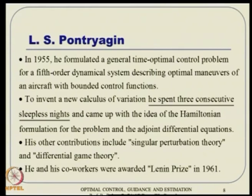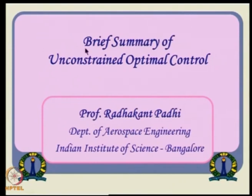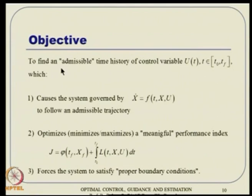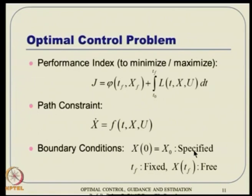Pontryagin's contribution simplified the framework: when you follow the state equation, costate equation, and optimal control equation, we do not really need to worry about Euler-Lagrange equations anymore. So let us quickly review the unconstrained optimal control framework we studied before. The objective was to find an admissible time history of the control variable from t_0 to t_f, which causes the system governed by nonlinear dynamics to follow an admissible trajectory while optimizing a meaningful performance index of the Bolza class, and satisfying proper boundary conditions.